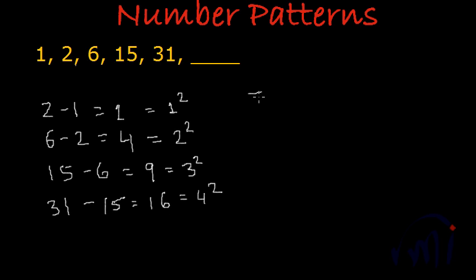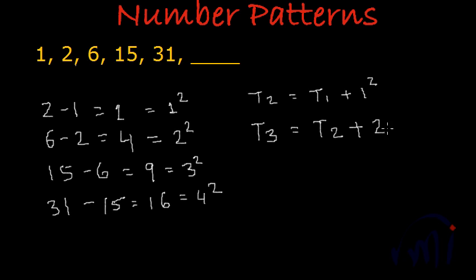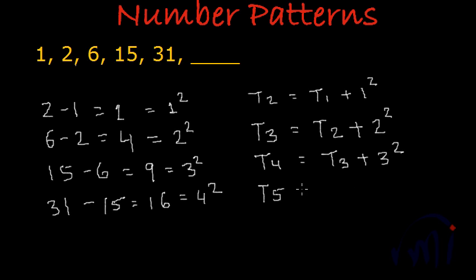So the second term equals the first term plus 1 squared. The third term equals t2 (which is 2) plus 2 squared (which is 4), giving us 6. The fourth term t4 equals the third term plus 3 squared. And the fifth term t5 equals t4 plus 4 squared — t4 is 15 and 4 squared is 16, so 15 plus 16 gives us 31.